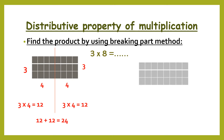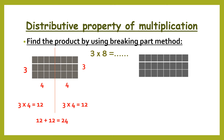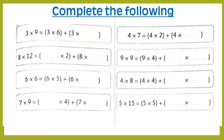We can also split 8 a different way. 8 can be 3 plus 5. Here we have 3 rows and 3 columns, and 3 rows and 5 columns. 3 times 3 equals 9 and 3 times 5 equals 15. Then add the products: 9 plus 15 equals 24.